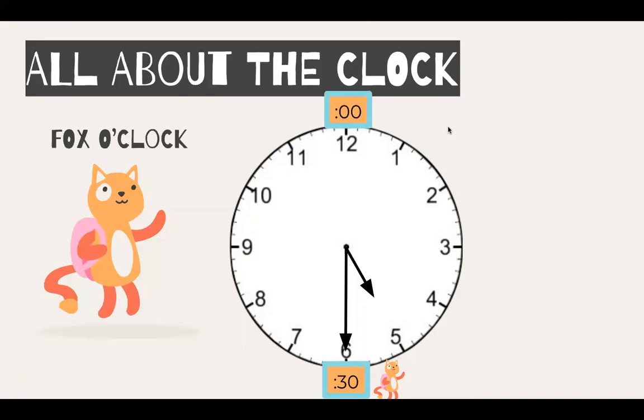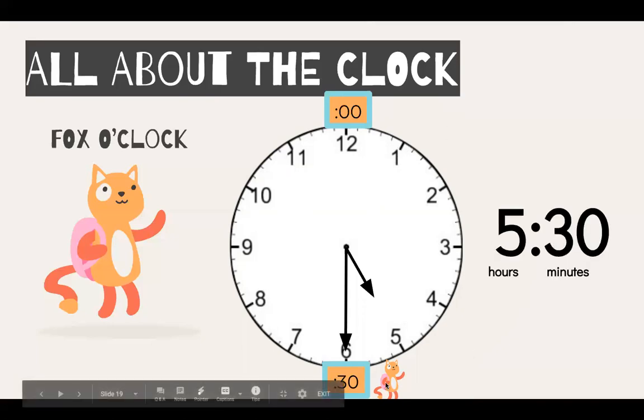Where is the hour hand now? The hour hand is on the five for 5:30. Fox O'clock is still hanging out on the 30.